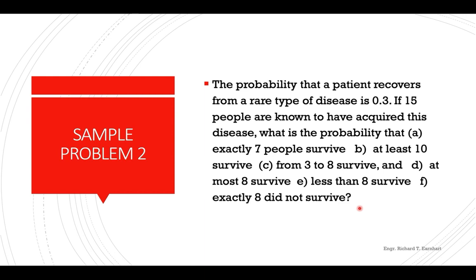Okay, for problem number two, the probability that the patient recovers from a rare type of disease is 0.3. If 15 people are known to have acquired this disease, what is the probability that exactly seven people survive, at least ten survive, from three to eight survive, at most eight survive, less than eight survive, and exactly eight did not survive?